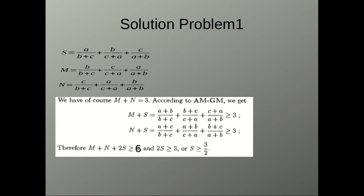We take the LHS as S and variate a bit to create M and N. This gives us M plus N is 3 and M plus S greater than or equal to 3 by simple AM-GM.